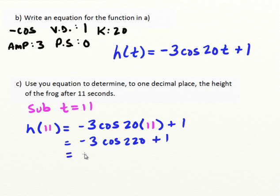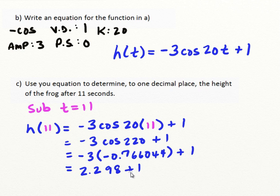The cosine of 220 is negative 0.766044, etc., plus 1. So negative 3 times negative 0.7, I'm going to multiply that value by negative 3, and we get 2.298, and then plus 1, and that gives me a final answer of 3.298. Rounded, that is 3.3 meters.